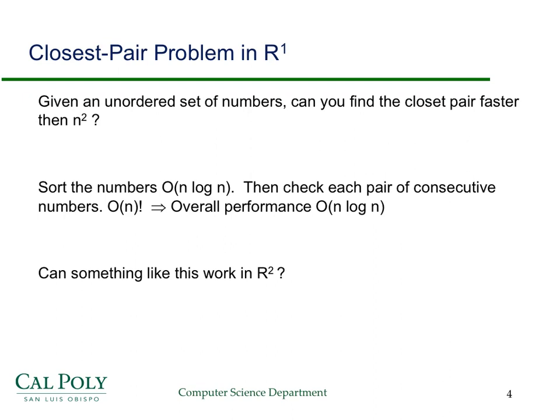Here's a solution that's relatively straightforward. You just sort the numbers, and that's going to take O(n log n). Then you can check each pair of consecutive numbers. The first sorting is O(n log n), checking each pair is just O(n), and so the overall performance is O(n log n).